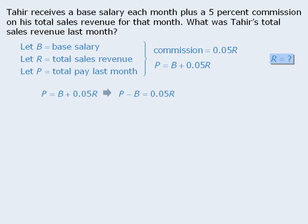Dividing both sides by 0.05 gives us R equals P minus B over 0.05. We can now rephrase the target question as: what is the value of P minus B over 0.05? At this point, we can see exactly what sort of information will allow us to solve the target question — we need to know the value of P and the value of B, or we can answer it if we know the value of P minus B.